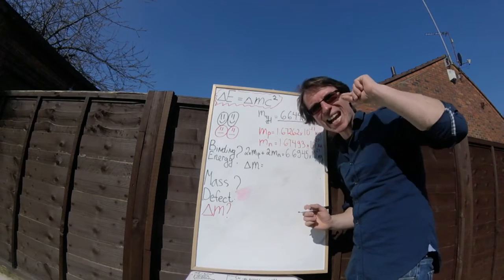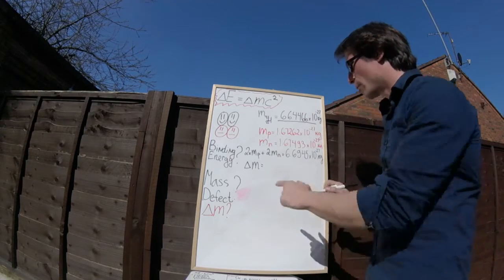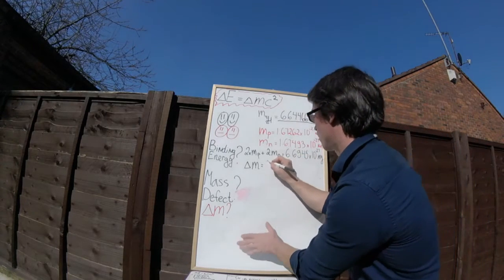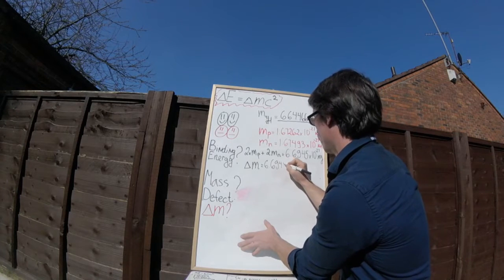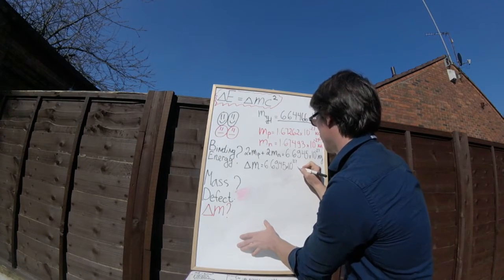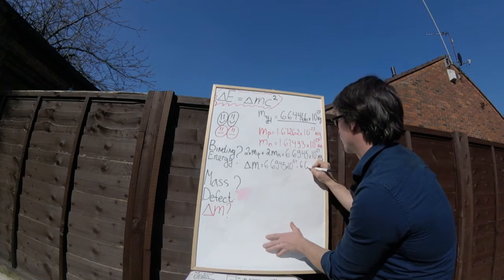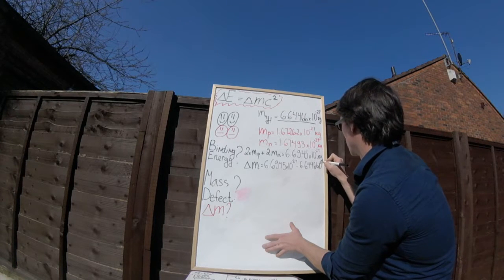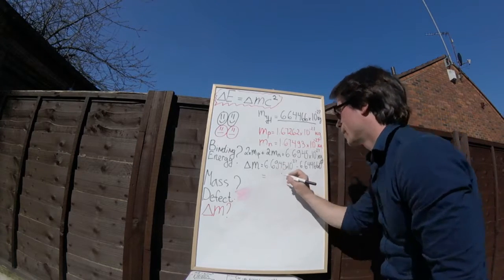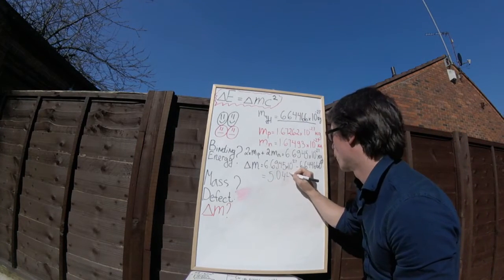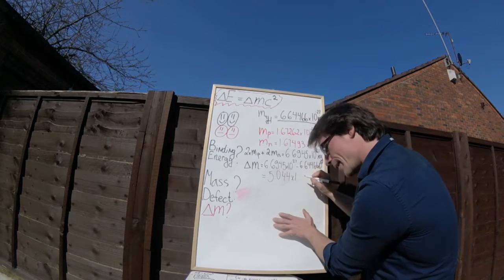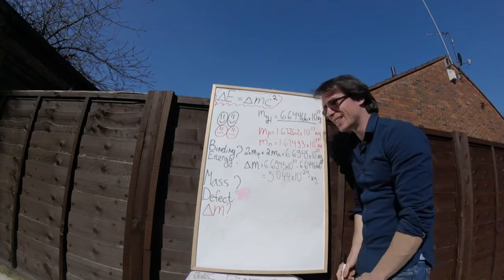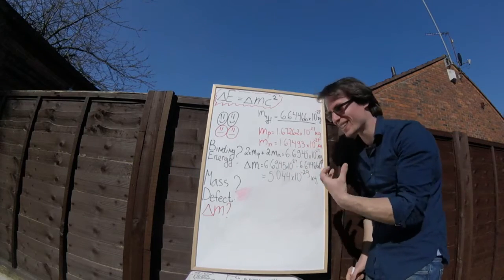Let's calculate the exact difference in mass. Delta M, the mass defect, is going to be just this mass, 6.6945 times 10 to the power of minus 27, minus the mass of the alpha particle, which is 6.64466 times 10 to the power of minus 27. And if we put that into a calculator, we're going to get 5.044 times 10 to the power of minus 29 kg. And this over here is our mass defect, is by how much the two masses differ.